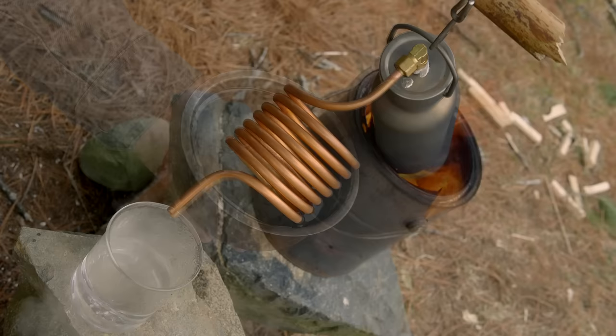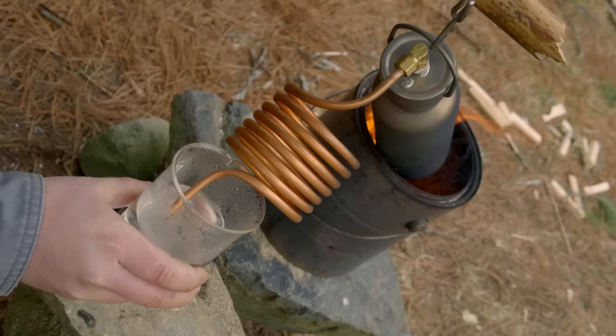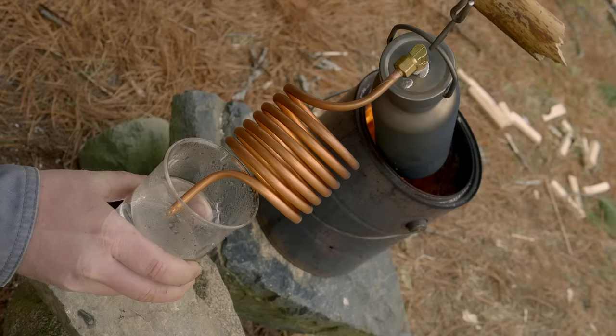One final efficiency tip is that once you have built up enough water in your collection container, the end of the tubing can be dipped into it. And in that way your fresh water itself will act as a condenser for any steam that exits the tubing.